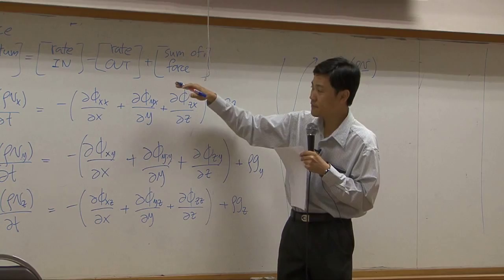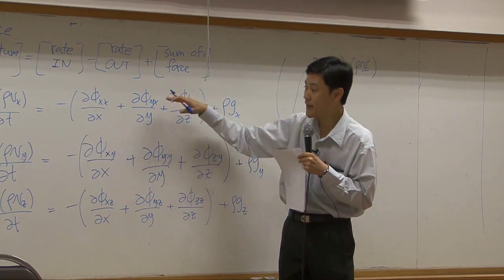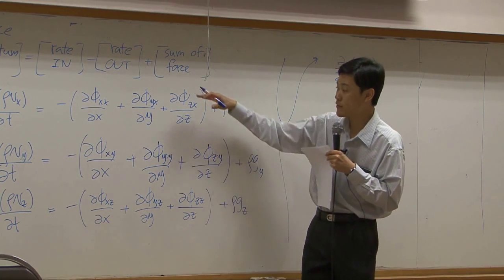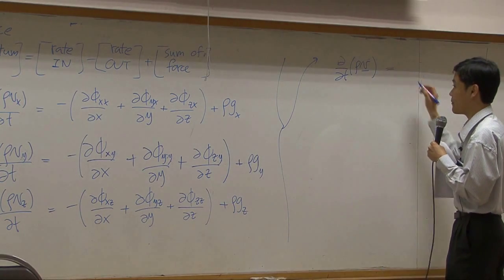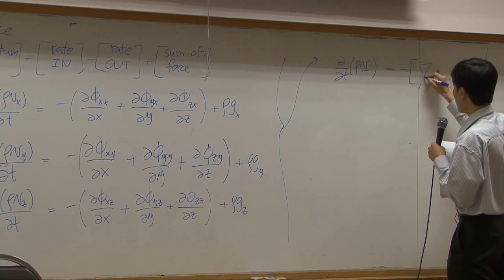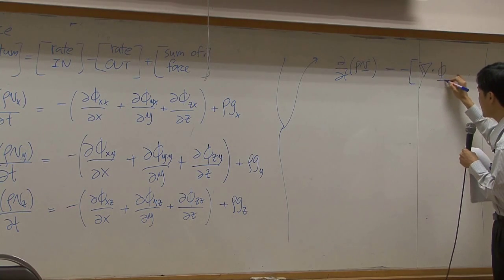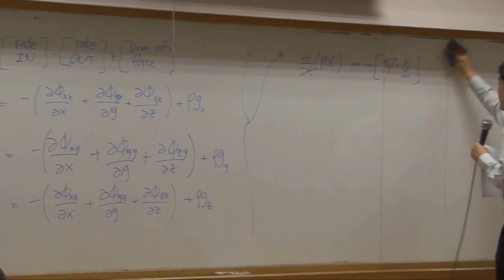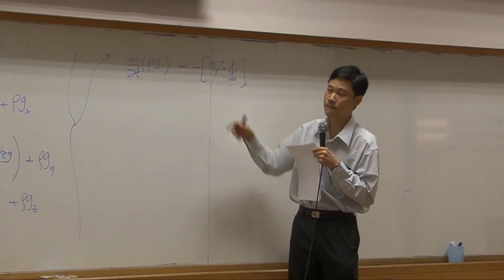However, you have phi xx, xy, and xz. Phi itself is not vector. It's a tensor. So when you combine these nine components together, you end up like this: del dotted with tensor phi. Minus signs up front.